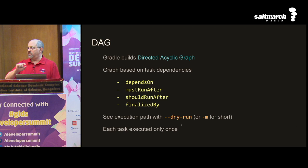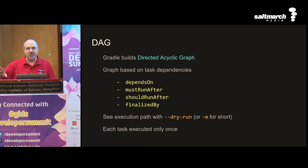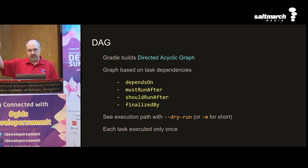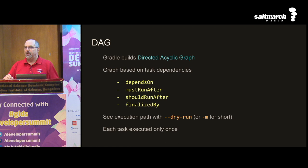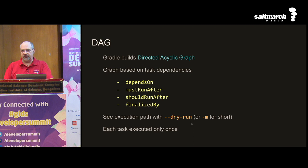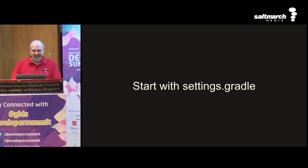Both dependsOn and finalizedBy take a vararg list so you can separate multiple tasks by commas. The less common ordering methods are mustRunAfter and shouldRunAfter — these only affect order when both tasks are explicitly requested; they don't add implicit dependencies. Use --dry-run (or -m) to see the task execution order without actually running anything, so you can verify your task dependencies are set up correctly.